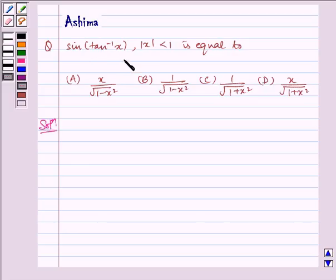Sin(tan^(-1)x), where |x| < 1, is equal to: (A) x/√(1-x²), (B) 1/√(1-x²), (C) 1/√(1+x²), (D) x/√(1+x²).